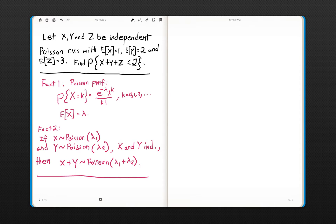Before you can tackle a problem like this, you must know two things. First, the actual PMF of a Poisson random variable, which is given here.